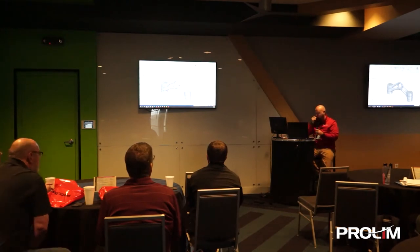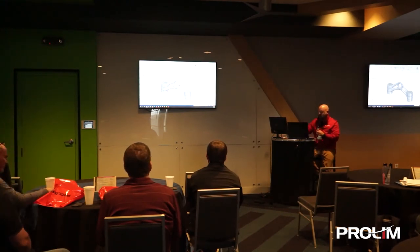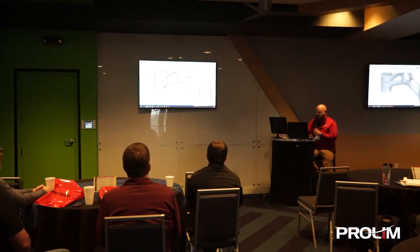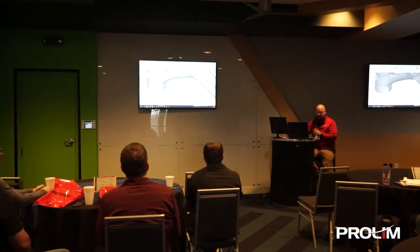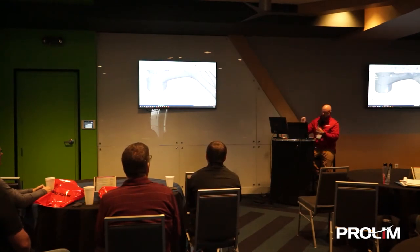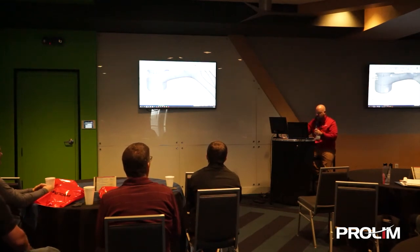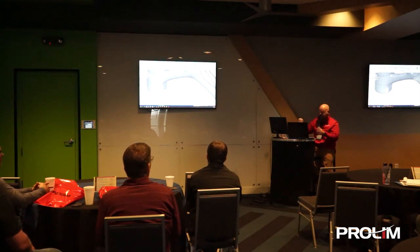One important thing with this part: as long as when we're applying the bridge command, the vertices and their location matter. If I were to select over here I would get an error. The vertices of the cage that you're building the bridge from has to meet the 3D sketch at some point.